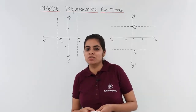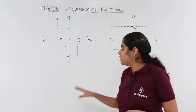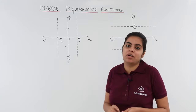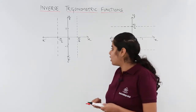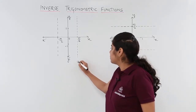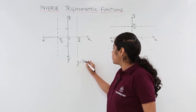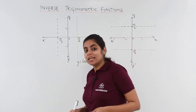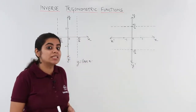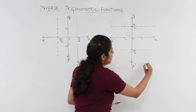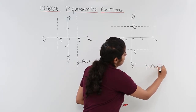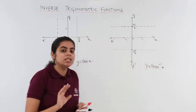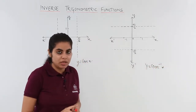Let's see what schematics have been drawn. We have two schematics drawn in front of us. The first is for cosecant x — that would be y is equal to cosecant x — and the second is for cosecant inverse x — that would be y is equal to cosecant inverse x. So these two graphs we are going to draw.